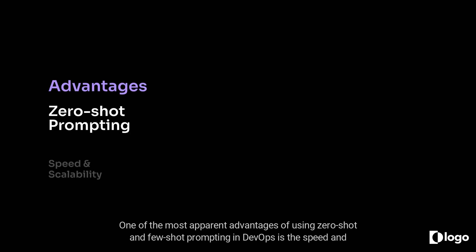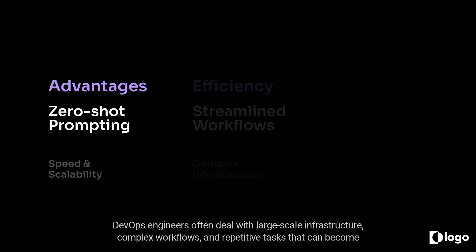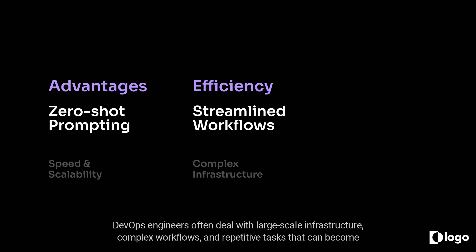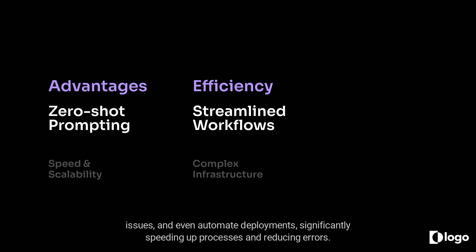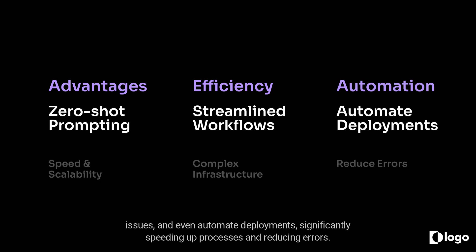Benefits of Zero-shot and Few-shot Prompting in DevOps. One of the most apparent advantages is the speed and scalability it offers. DevOps engineers often deal with large-scale infrastructure, complex workflows, and repetitive tasks that can become overwhelming. With the power of these AI-prompting techniques, engineers can quickly generate configurations, troubleshoot issues, and even automate deployments, significantly speeding up processes and reducing errors.